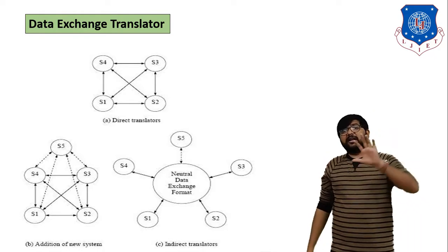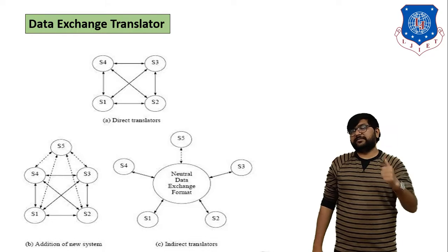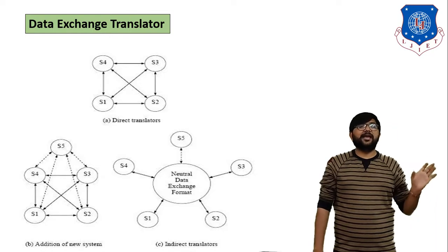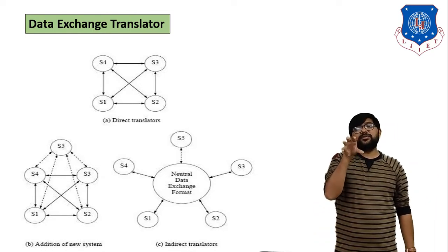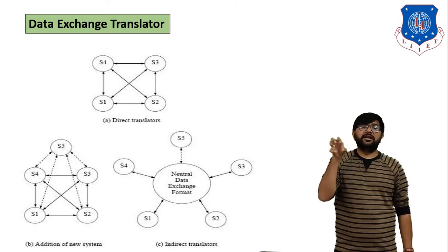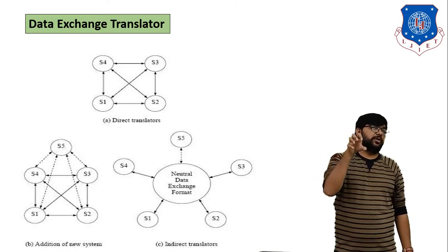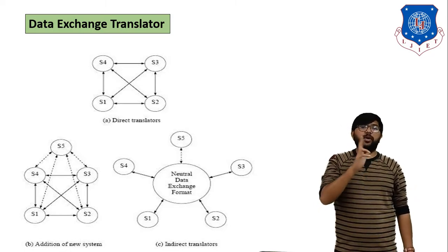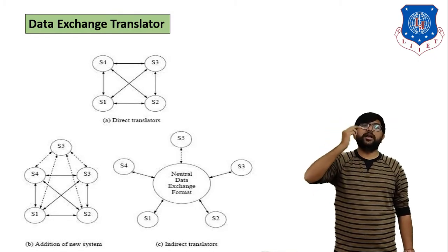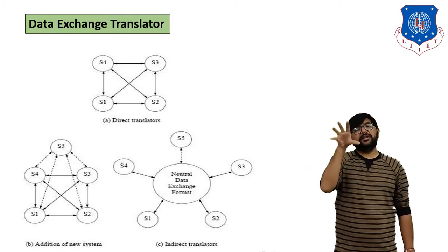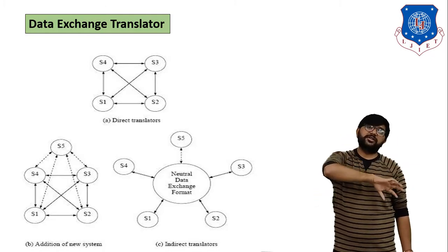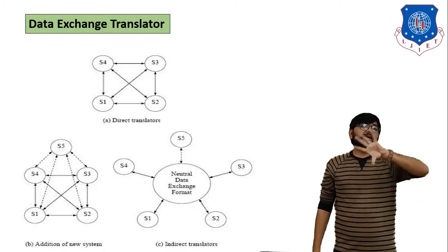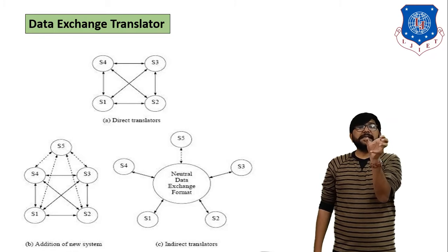Data Exchange Translator has two parts. The first is Direct Translator. In figure A showing the Direct Translator, there are four systems — S1, S2, S3, and S4 — all connected with each other. This means you can transfer data from S1 to S2, S1 to S3, or any combination. Because all four systems are directly connected with each other, this is the Direct Translator.